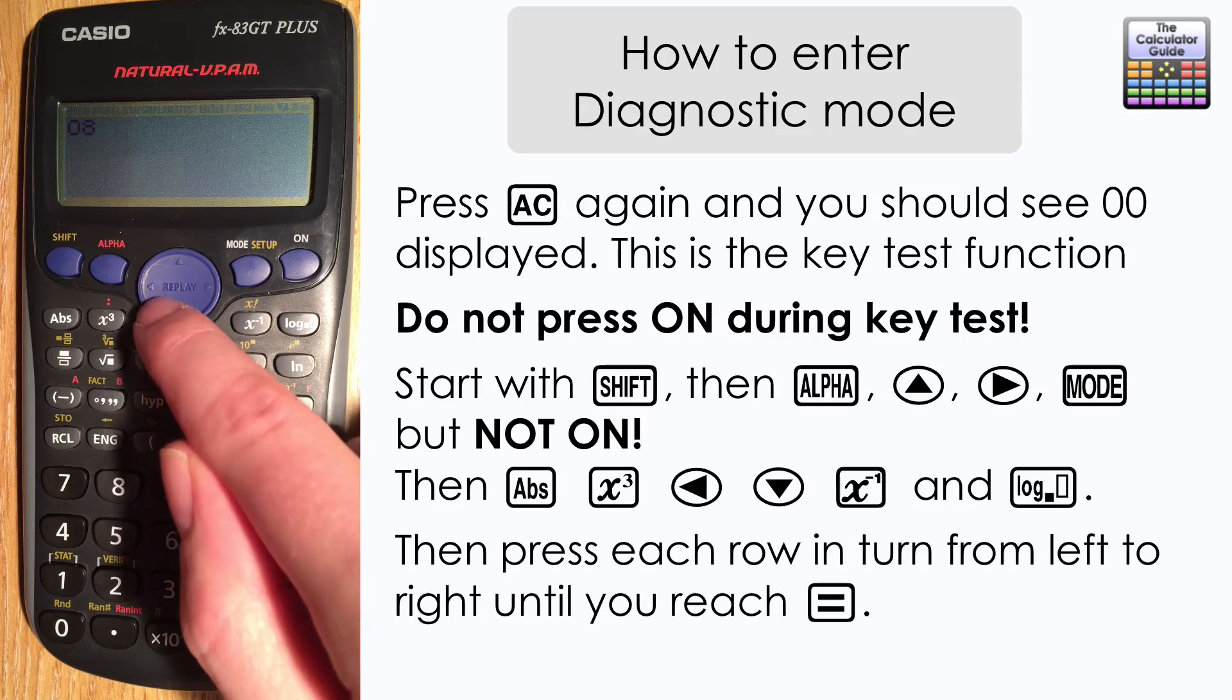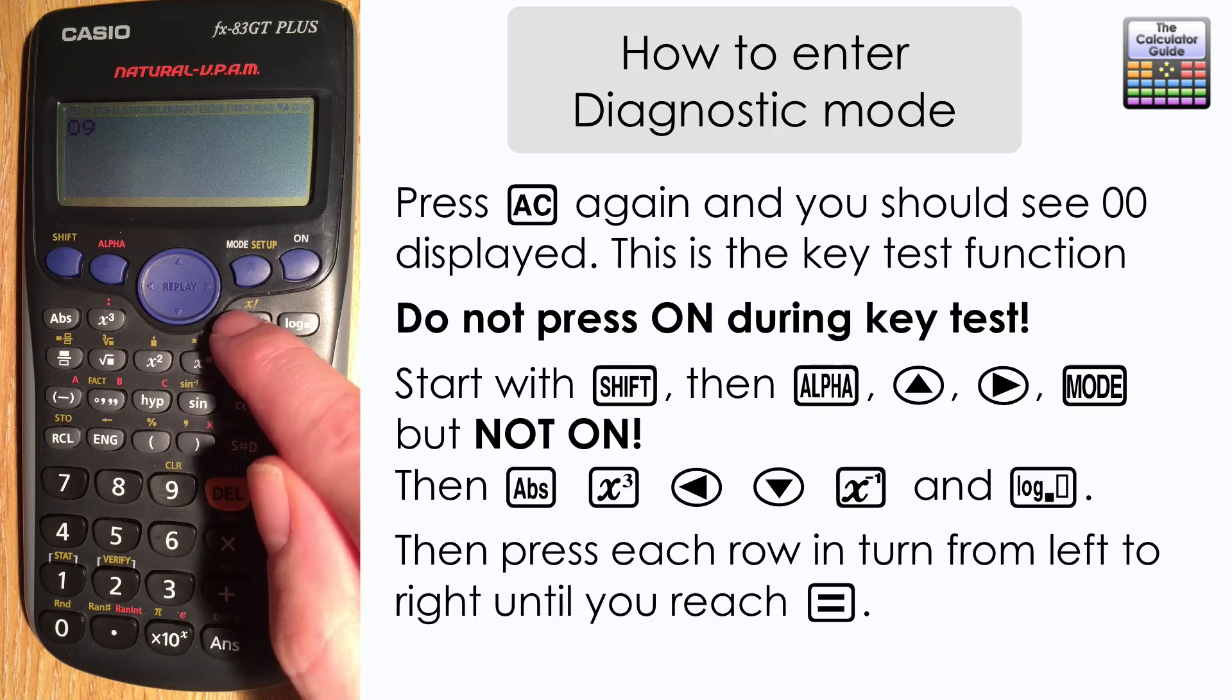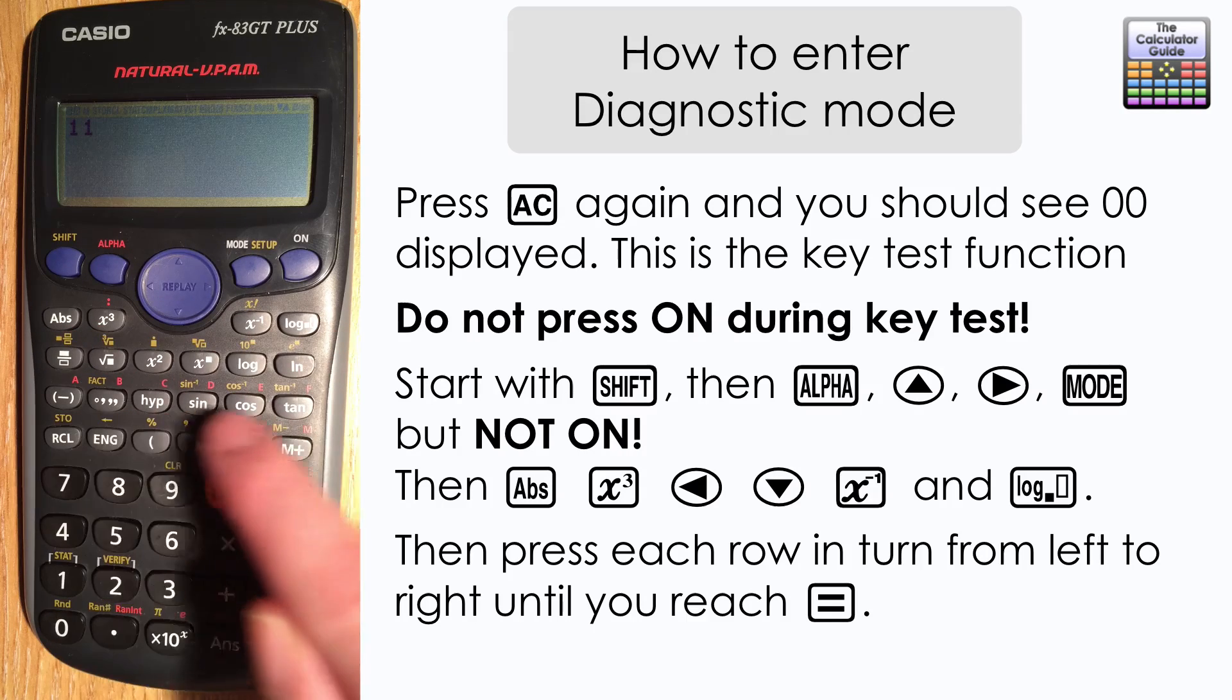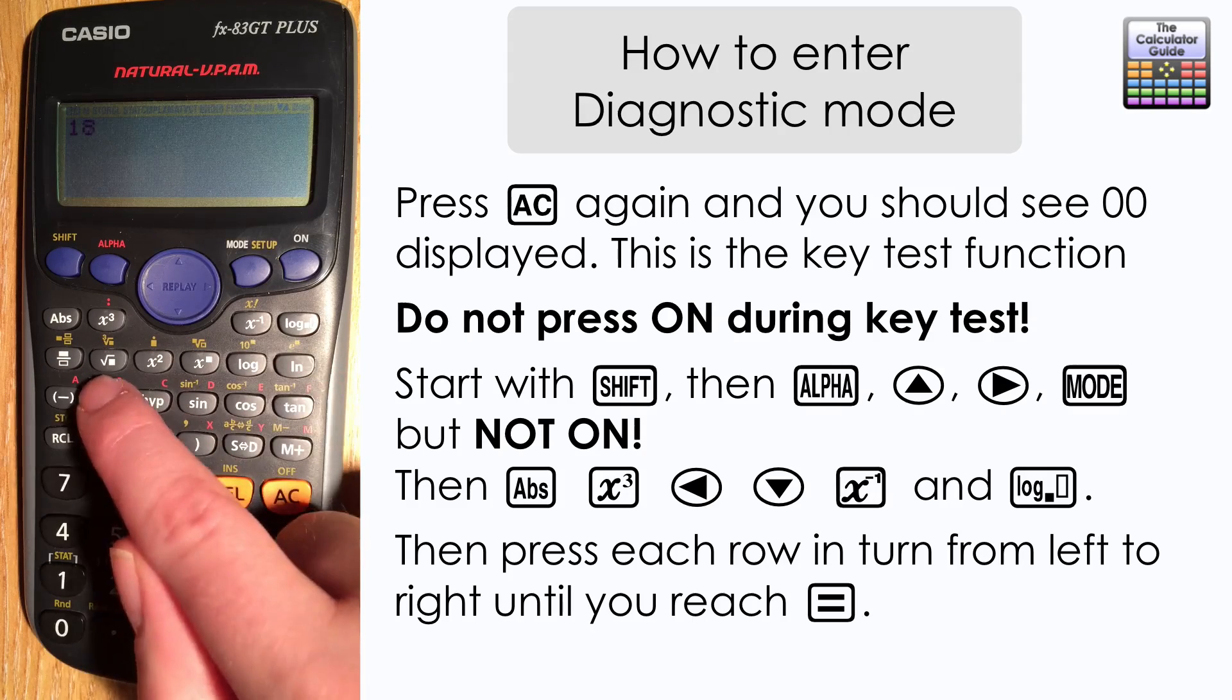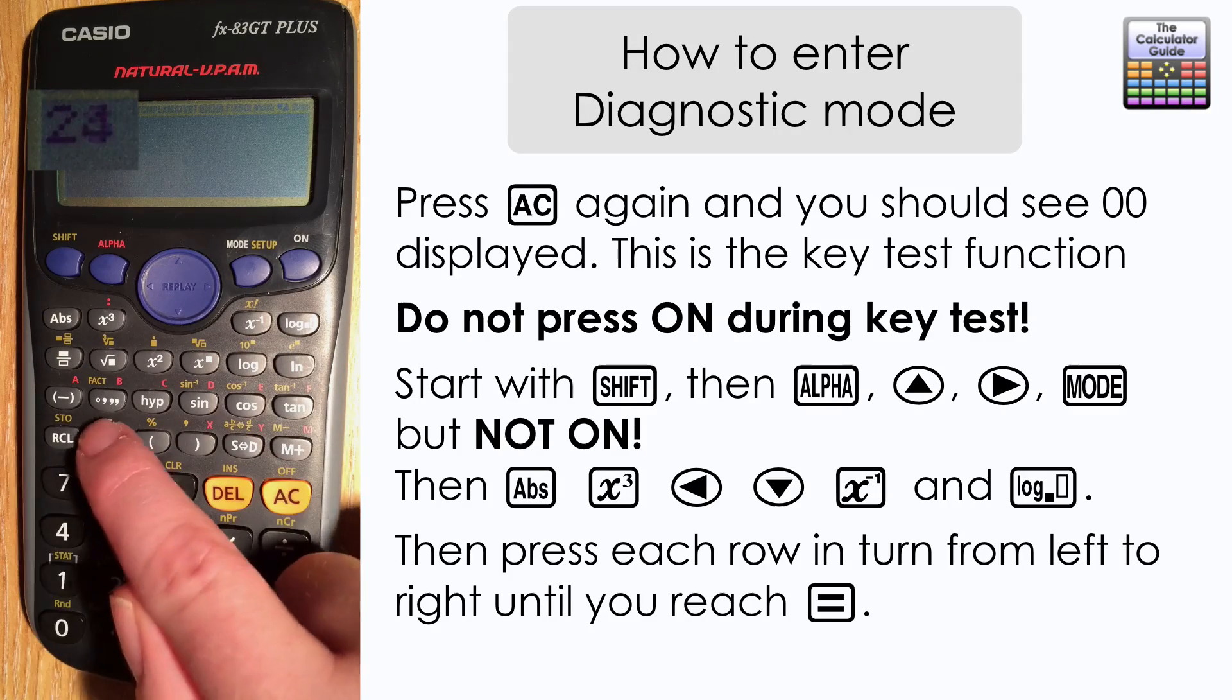Then start on the next line with the absolute function, x cubed, left, down, x to the power of minus one, and then the log to any base button. From now on, it's each row at a time, starting from the left to the right, until you reach equals.